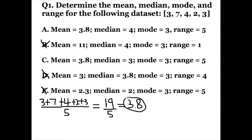Now let's move on with the median. To find the median, we want to look for the middle number, but we have to put the numbers in order from smallest to largest first. This is very important. Let's go ahead and rewrite these in order: two, three, three, four, and then seven.